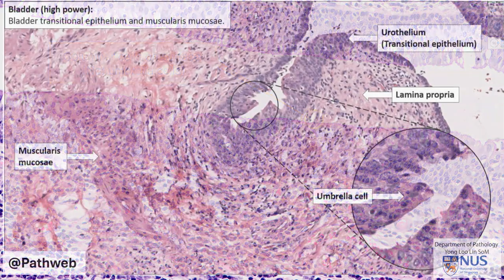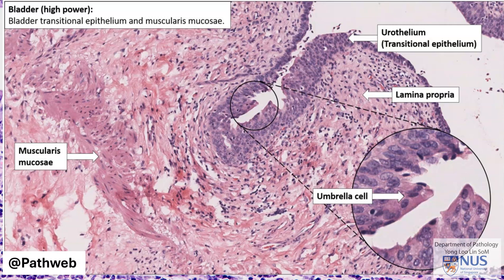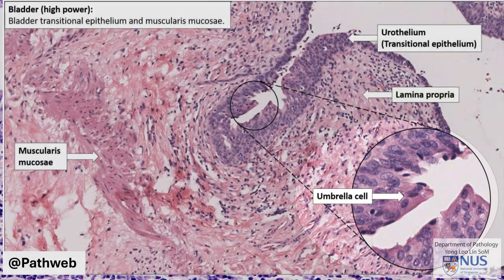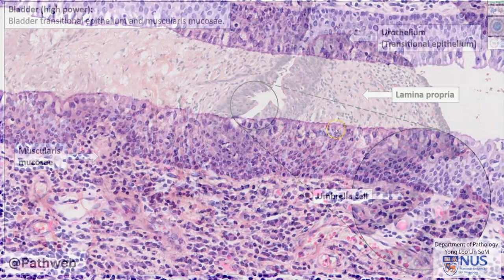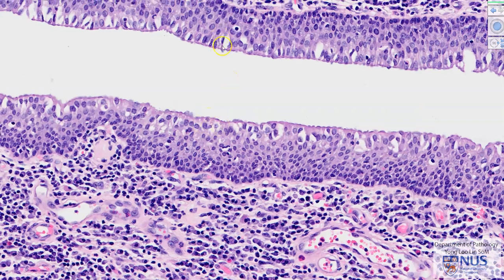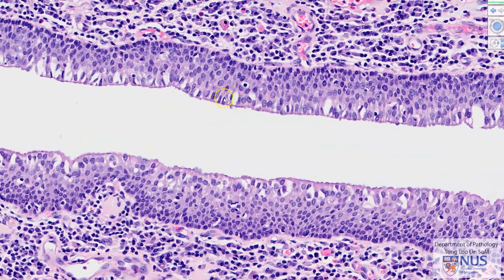Umbrella cells are usually polygonal, very large, with abundant cytoplasm and one to several nuclei. Here we can see that the surface epithelial cells are columnar in shape, and this can also be seen very nicely here.